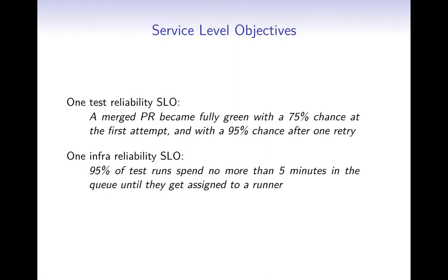After that, we formulated service level objectives on the same wiki page — six SLOs that define measurable properties together with an objective implementing aspects of our goals. The first example describes test reliability — we don't want to have to retry wide pull requests too often unnecessarily. The second applies to infrastructure reliability. There are four more but they don't introduce anything fundamentally new.